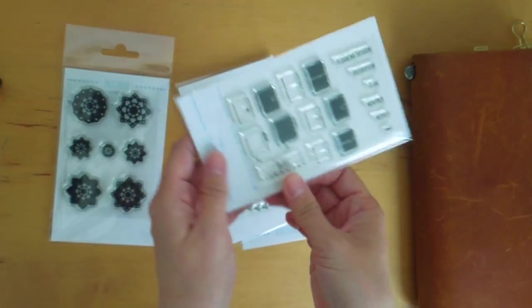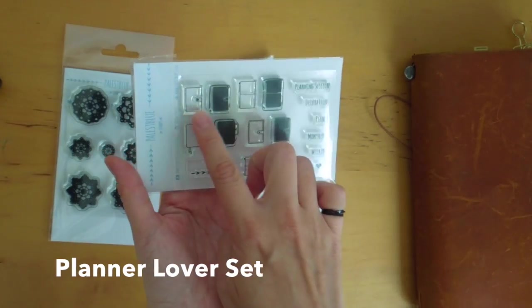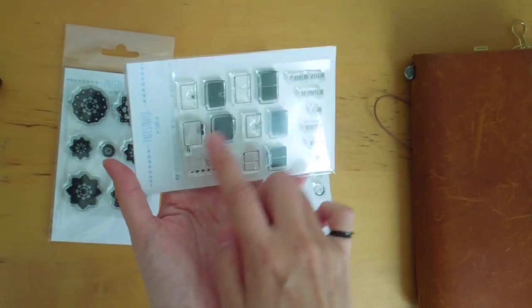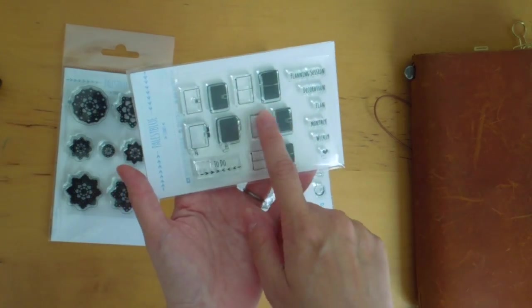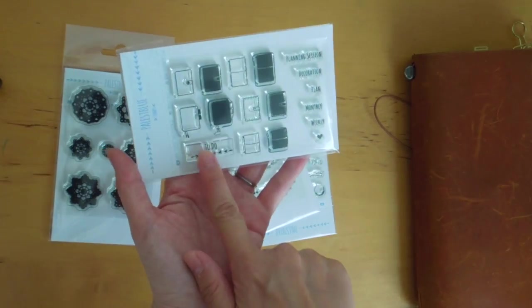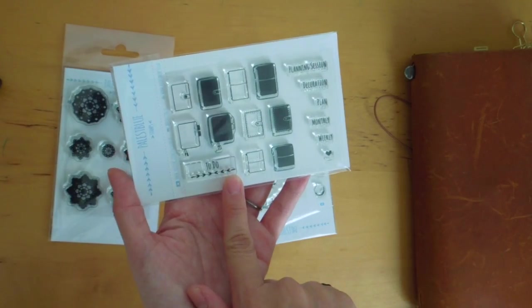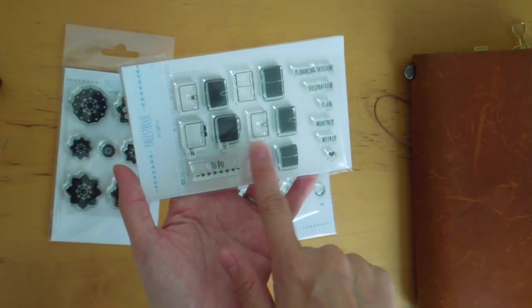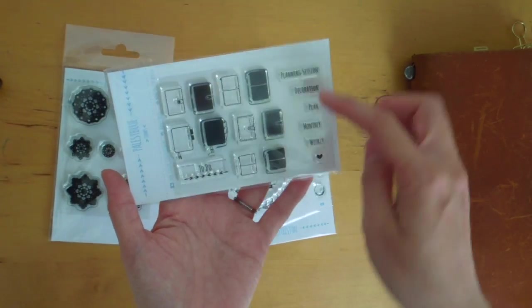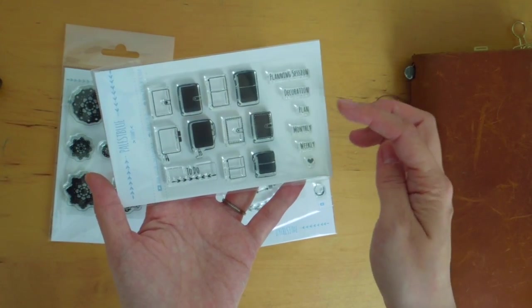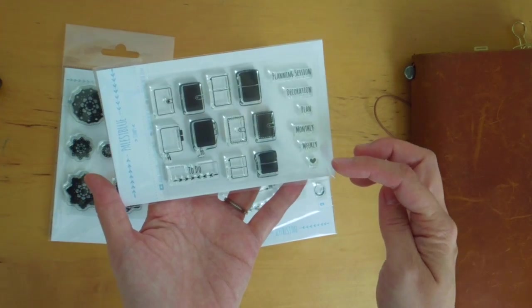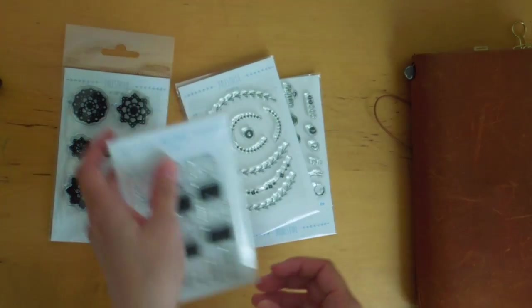And this awesome planner stamp set so you can have your Filofax, your traveler's notebook, your Hobonichi Techo. I guess you can have it's a ring bound planner. And then it has a nice to do stamp as well as your mini traveler's notebook versions. And then it has these different headings. It has planning session, decoration, plan, monthly, weekly, and a heart. Oh my goodness.